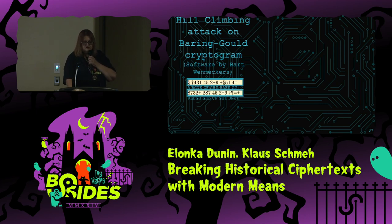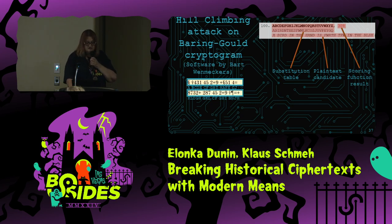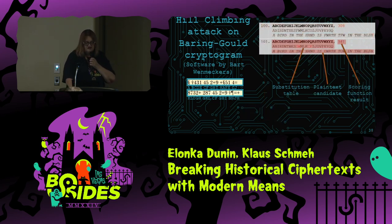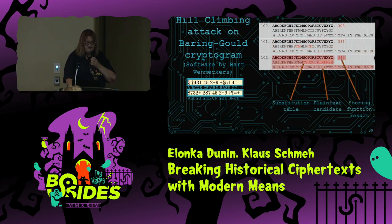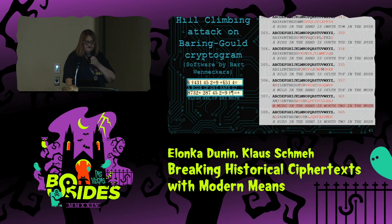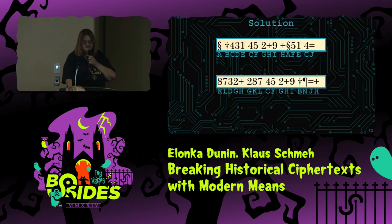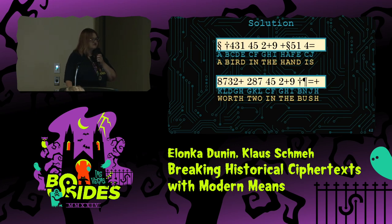Looking at the Baring-Gould cryptogram, we have our substitution table, our plaintext candidate, the result, the score, and the step — tracking only successful steps. At the penultimate step, we have a plaintext candidate of 'a bird in the hand is worth two in the mush,' which the human brain kind of jumps on, but the computer hasn't quite gotten it. Then it gets to the next step: 'a bird in the hand is worth two in the bush' — the correct plaintext for this particular cryptogram.